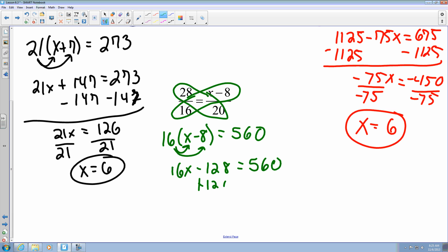I'm going to add 128 to both sides. So now I've got 16x equals 560 plus 128, which gives me 680. So now if I divide both sides by 16, I get x equals 43.